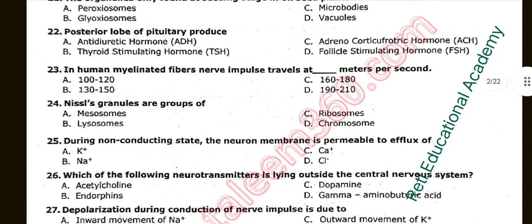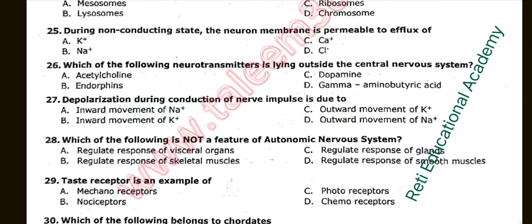Question number twenty-two: Posterior lobe of the pituitary gland produces. The correct option is A: ADH. Question number twenty-three: In human myelinated fibers, nerve impulse travels at dash meters per second. The correct option is A: 100 to 120. Question number twenty-four: Nissl's granules are groups of. Option C is correct: Ribosomes. Question number twenty-five: During non-conducting state, the neuron membrane is permeable to a flux of K+.